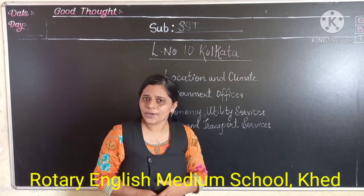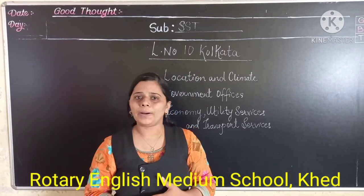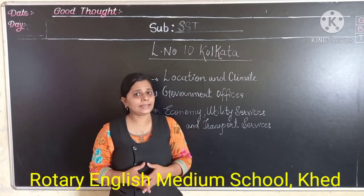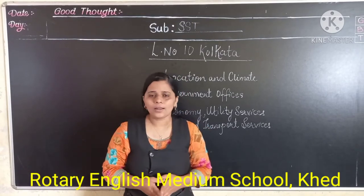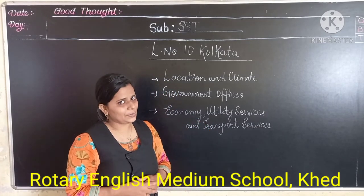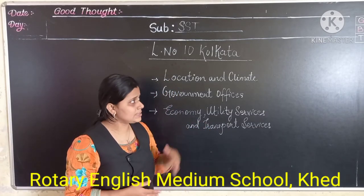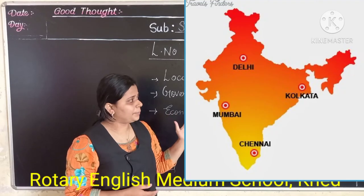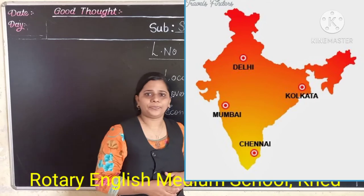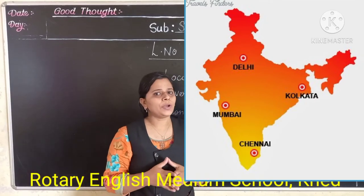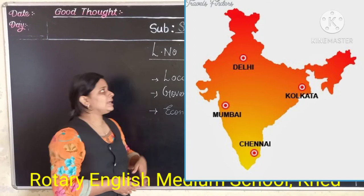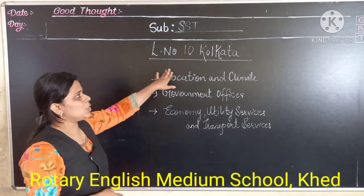In the earlier video, we discussed about the metropolitan cities. In India, there are four metropolitan cities — Delhi, Mumbai, Kolkata, and Chennai. Today we are going to discuss about the third metropolitan city, that is Kolkata.